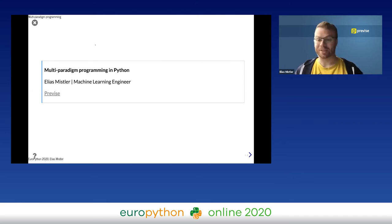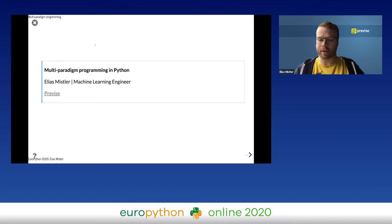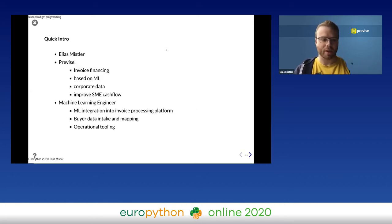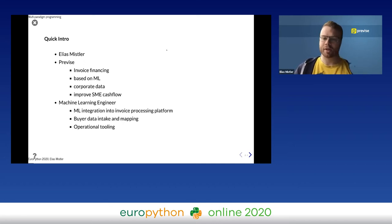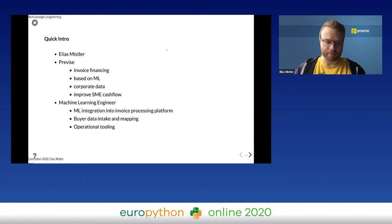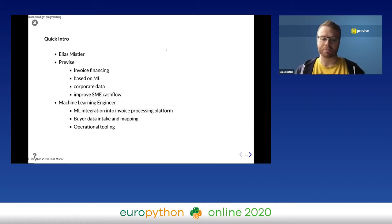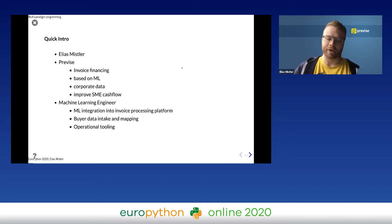Thank you Mark for the introduction and thank you everyone for joining. This is about multi-paradigm programming in Python. Previs, the company I work with, is an invoicing finance company and we use machine learning on large corporate data sets to predict whether invoices will be paid in the future, and then to finance invoices and improve the cash flow of small and medium enterprises. I'm a principal machine learning engineer and my main responsibility is integrating our machine learning algorithms into our invoice processing platform.